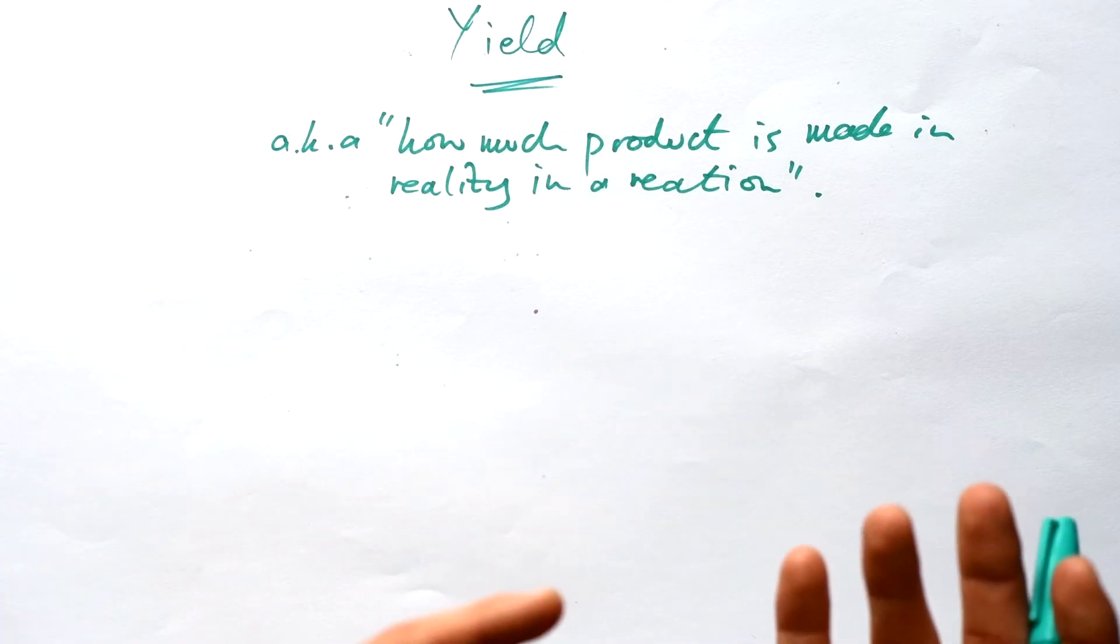Now, what about yield and percentage yield? Similar idea, but different enough that we can't confuse them. Yield is about how much product is made in reality from a reaction. When we write a chemical reaction, you might assume all reactants get reacted to make products, but that's not always the case. You probably won't get all reactants used up - maybe because there's a limiting reactant (one runs out before the other), or because it's a reversible reaction.